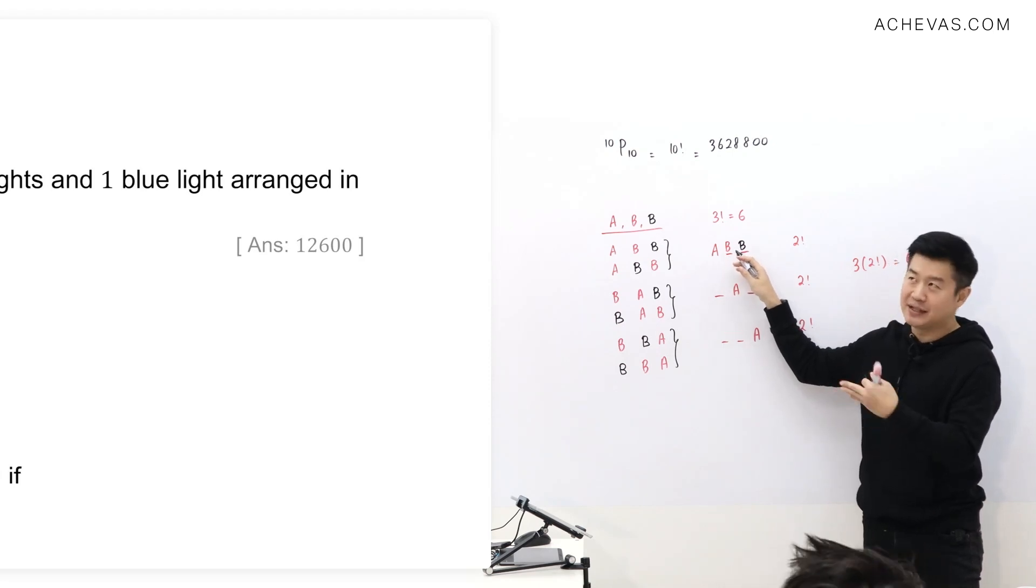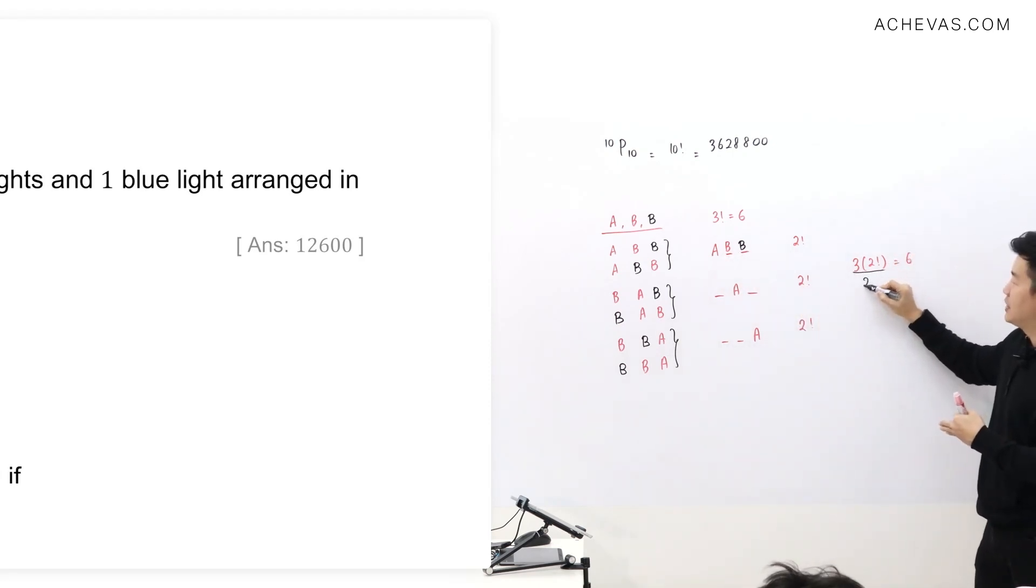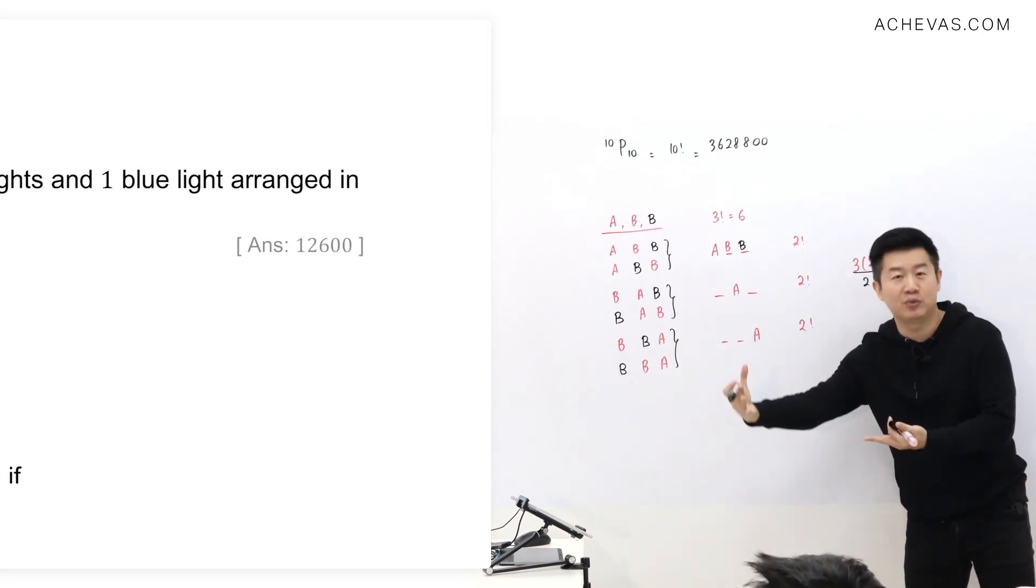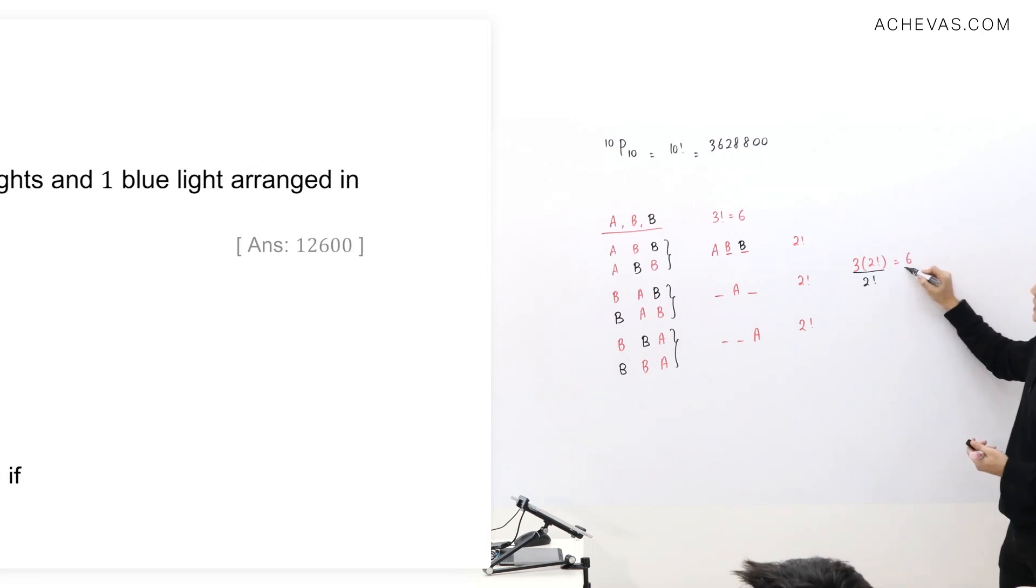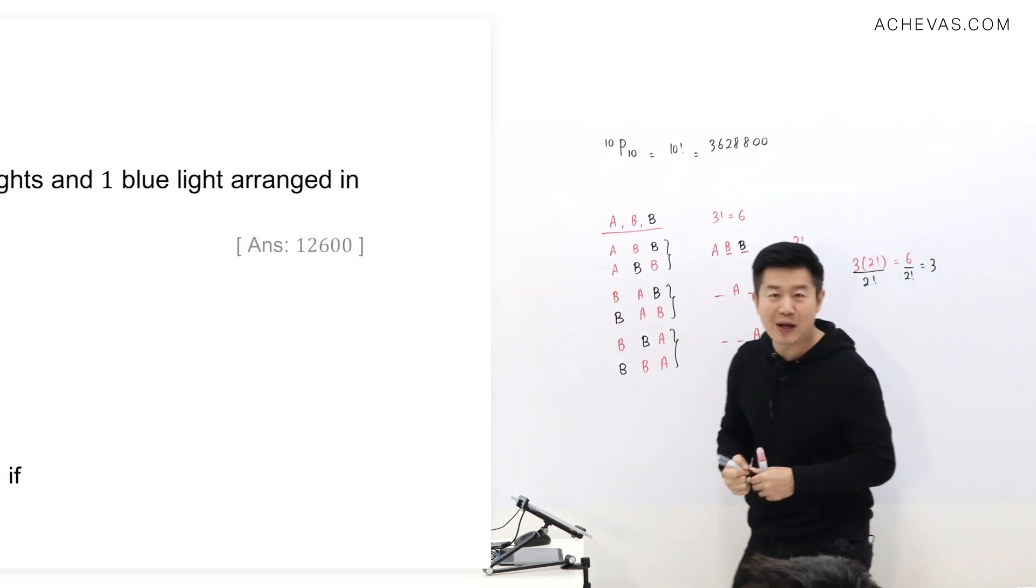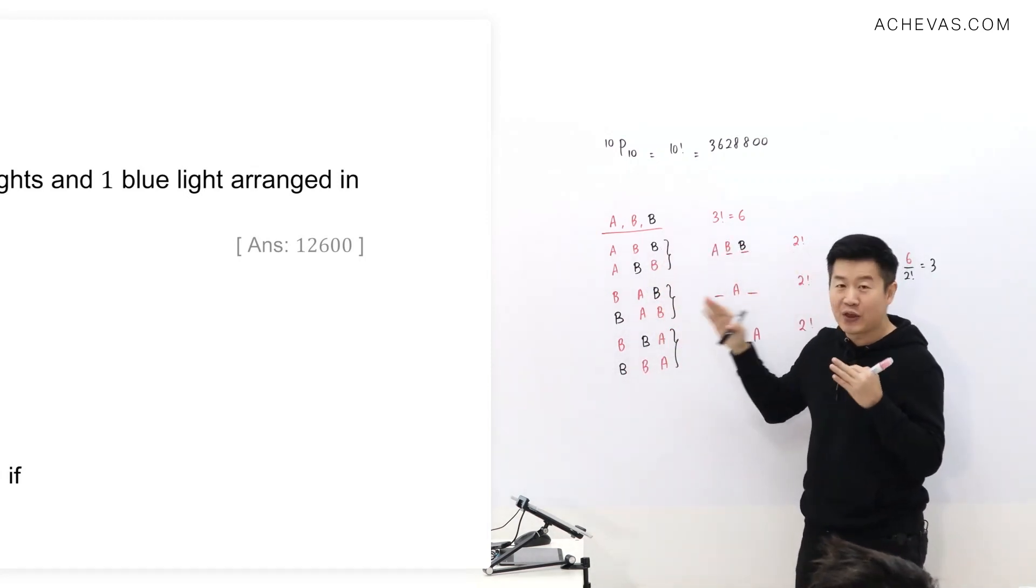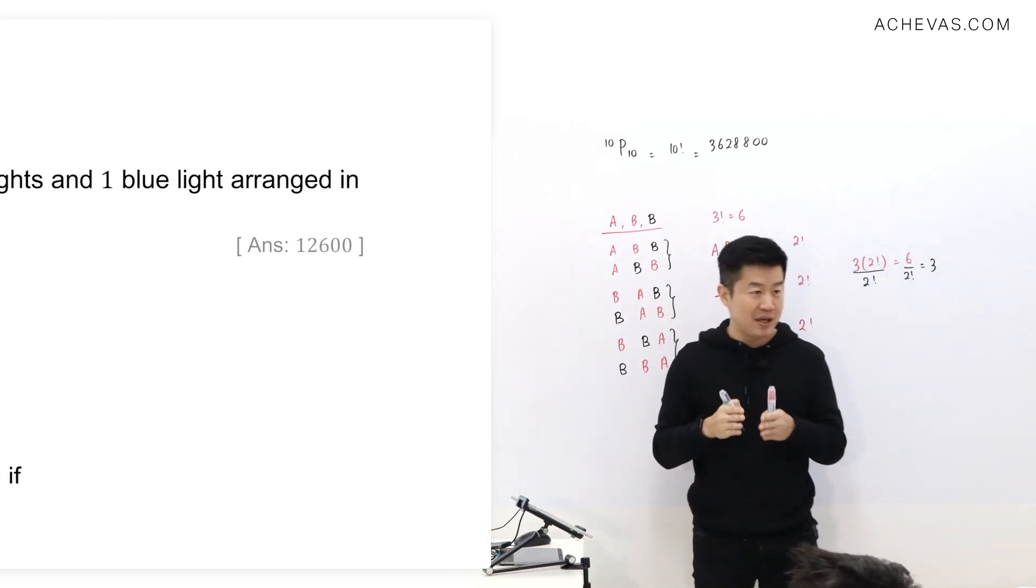But now it is not A, B, C. Now it's A, B, B. I'll take this. I'll divide this by whatever that I don't want, which is that 2 factorial. Because it was multiplied to it previously. So I can just take this 6 divided by 2 factorial. And good, because now I get 3. And 3 is what I was trying to count for. Because manually, I know that there are 3 possible ways to arrange A, B, B.